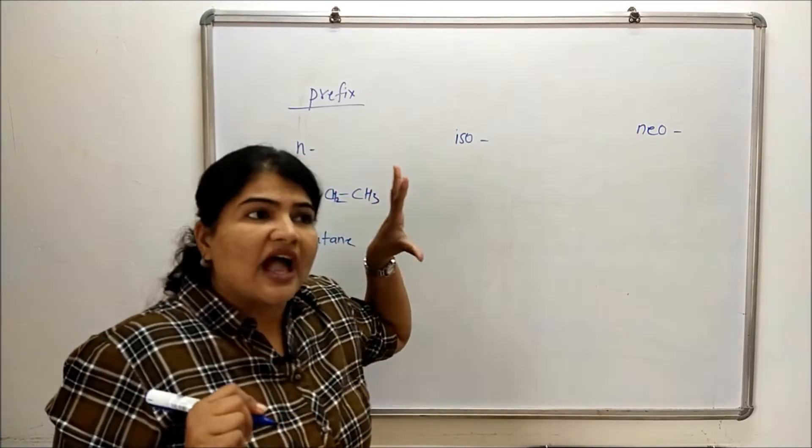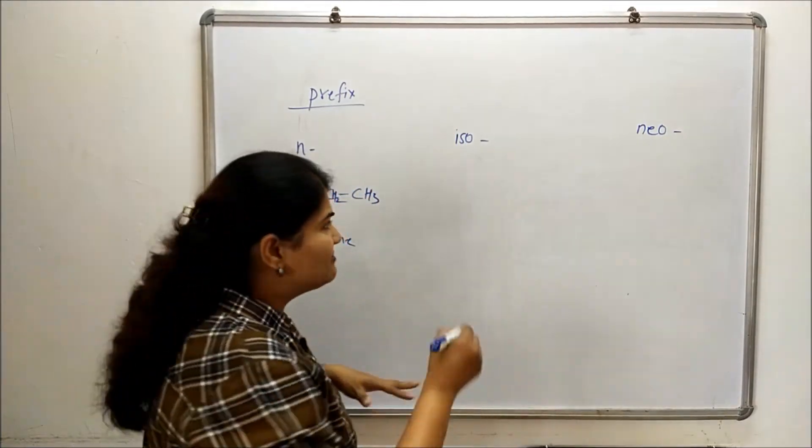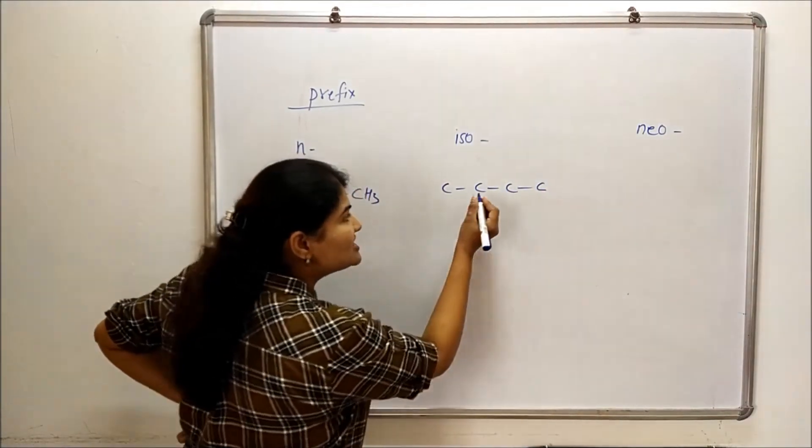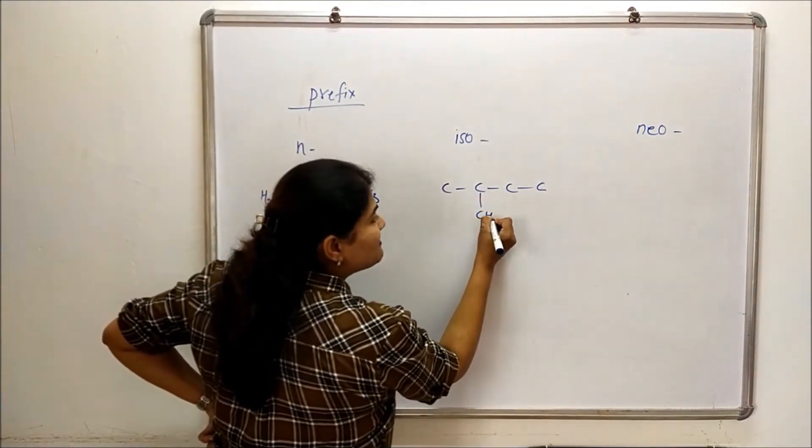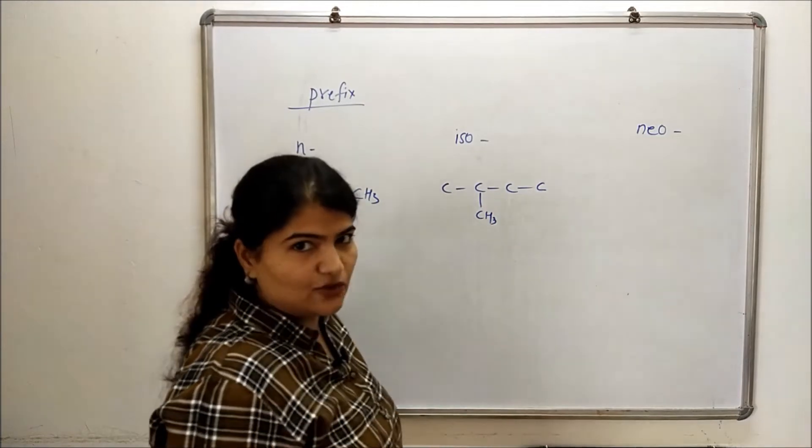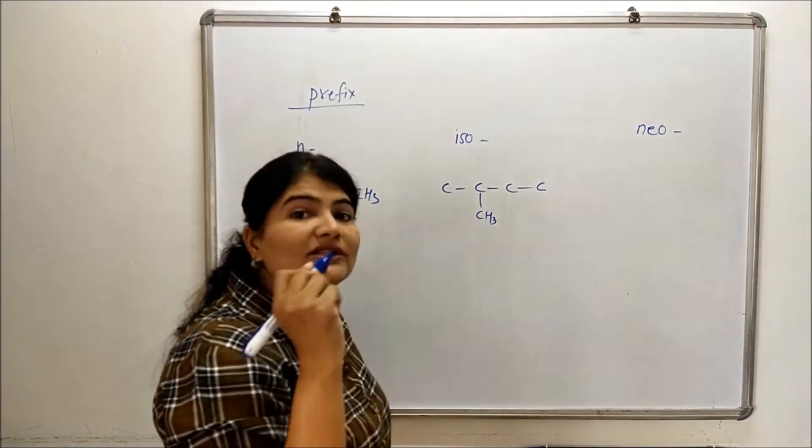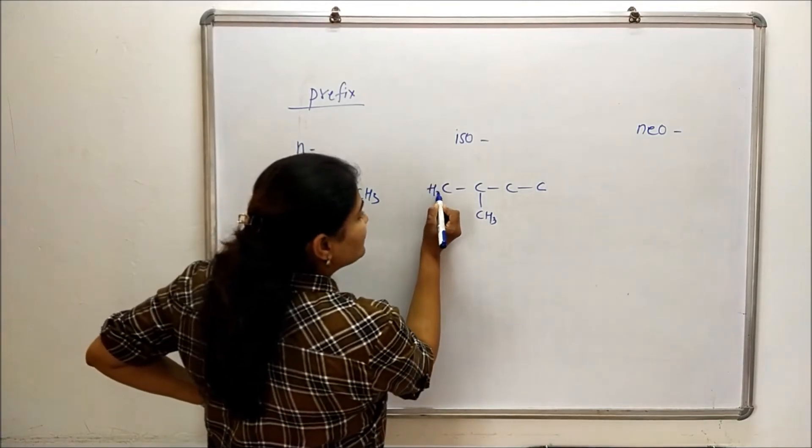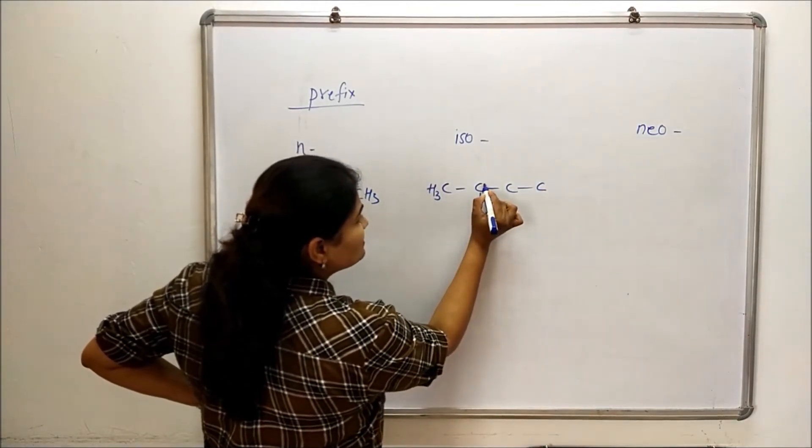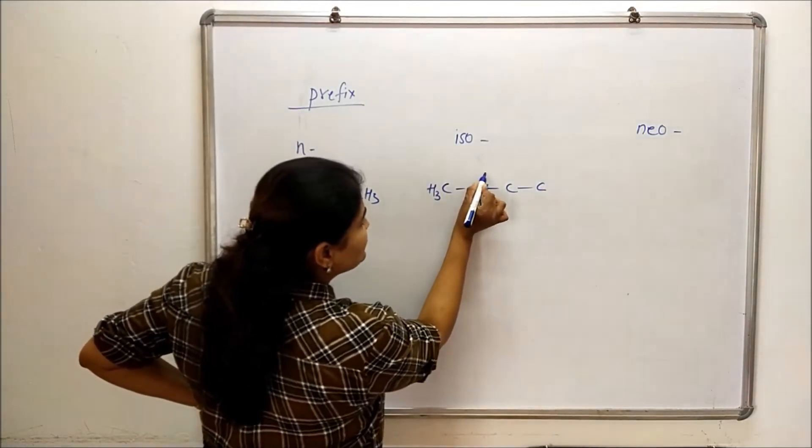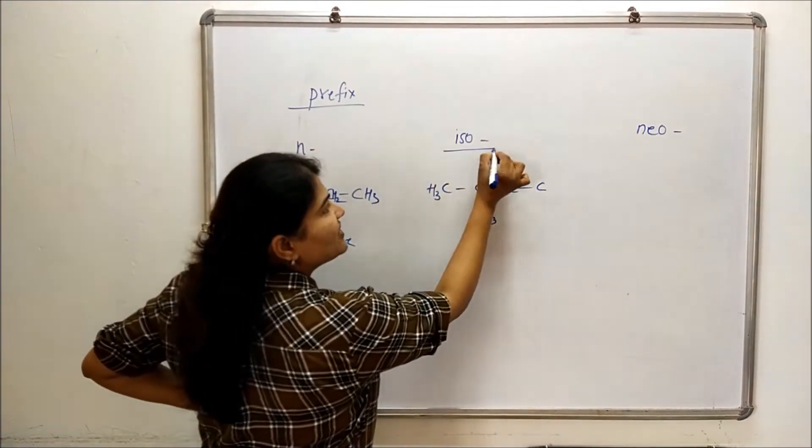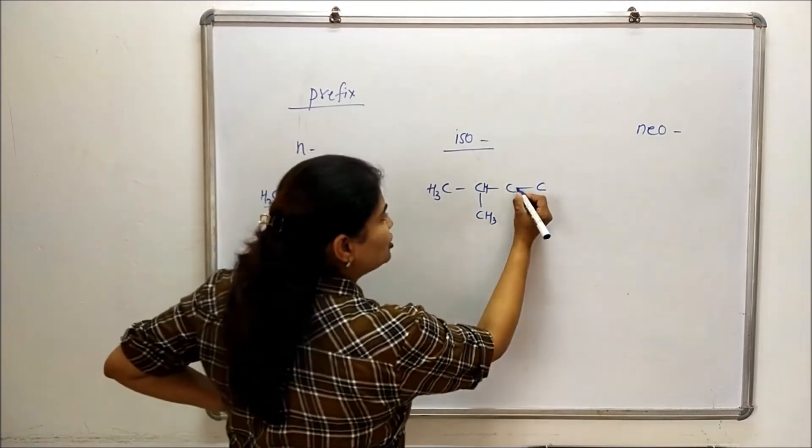Iso is the prefix used for compounds who are having a continuous chain of carbons whose second last carbon bears one methyl substitution. This is the only substitution present in the molecule. So obviously CH3-CH-CH3, this is going to be an integral part of the compounds where iso prefix will be used.